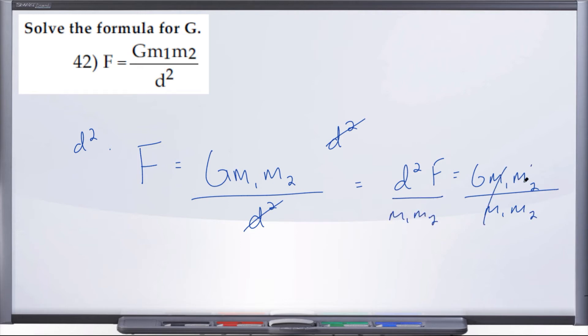And there we have it. We're left with, now because the m's cancel, so we're left with G equals d squared F over m sub 1, m sub 2. And the numerator could maybe be written in a different order. I'm not sure what the answer key says.